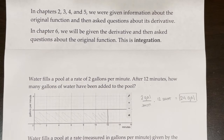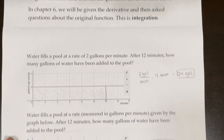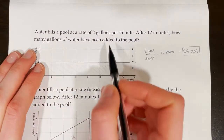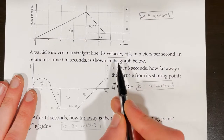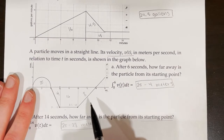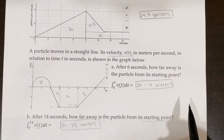In chapters 2, 3, 4, and 5, we were given information about the original function and asked questions about its derivative — finding f prime, the slope of the tangent line, the equation of the tangent line, and so on. However, in chapter 6, we will be given the derivative and asked questions about the original function — doing everything in reverse. This is integration on a basic level. The examples we worked through always gave us a rate, and then asked questions about the accumulated quantity — going from the derivative to the original function.